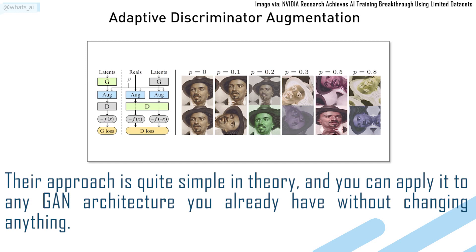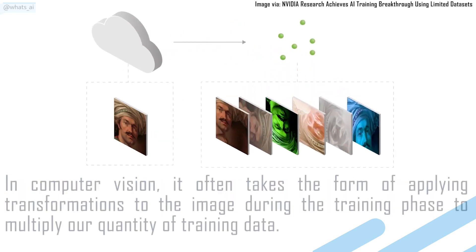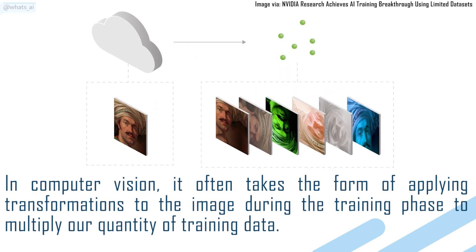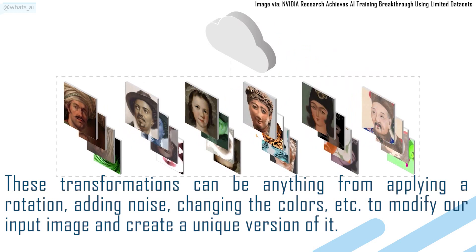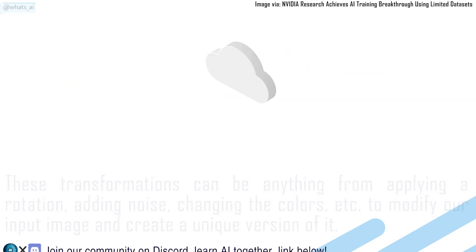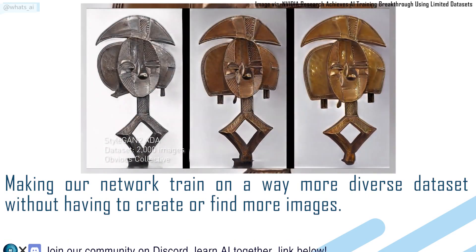Their approach is quite simple in theory, and you can apply it to any GAN architecture you already have without changing anything. As you may know, in most areas of deep learning, we perform what we call data augmentation to fight against overfitting. In computer vision, it often takes the form of applying transformations to the image during the training phase to multiply our quantity of training data. These transformations can be anything from applying a rotation, adding noise, changing the colors, etc., to modify our input image and create a unique version of it, making our network train on way more diverse datasets without having to create or find more images.